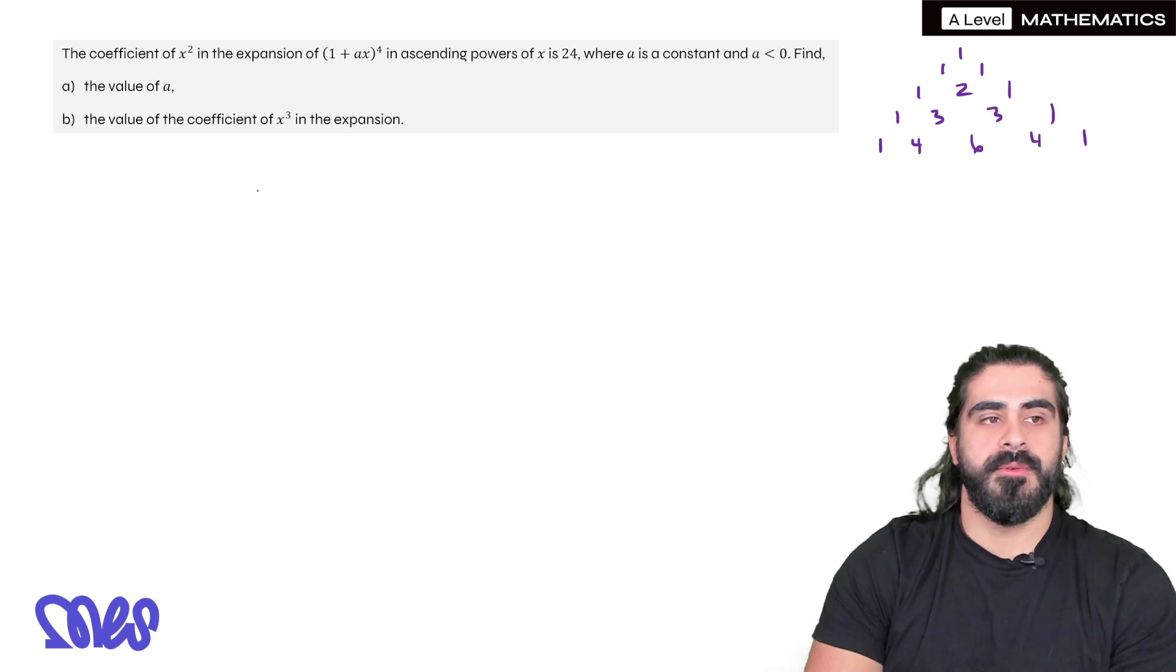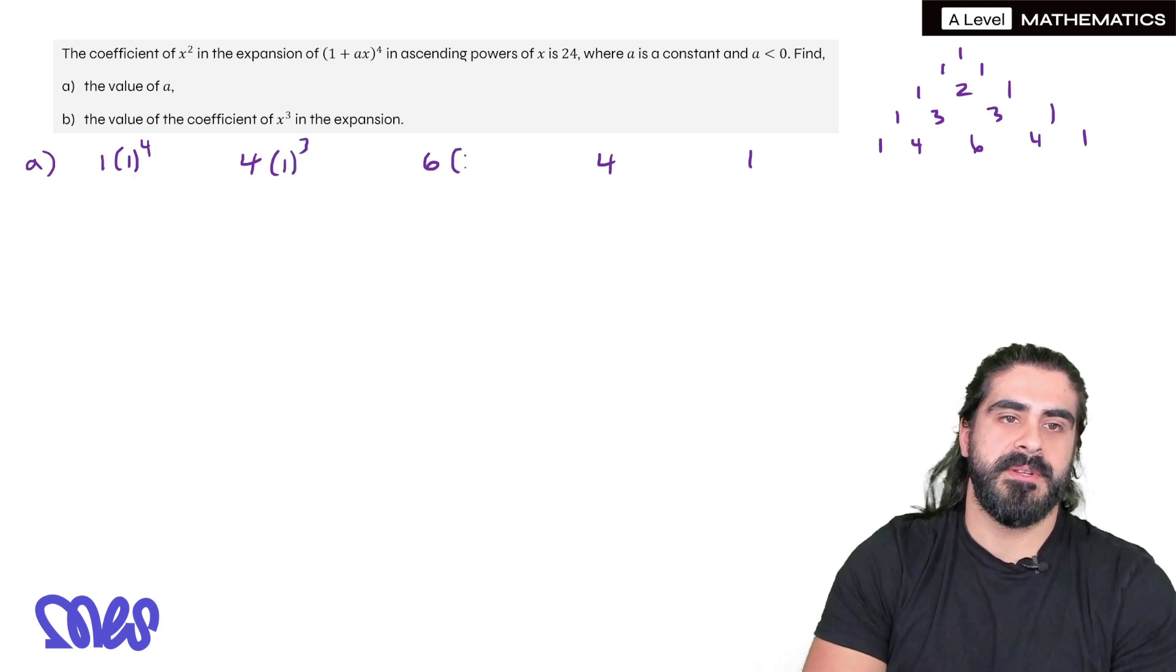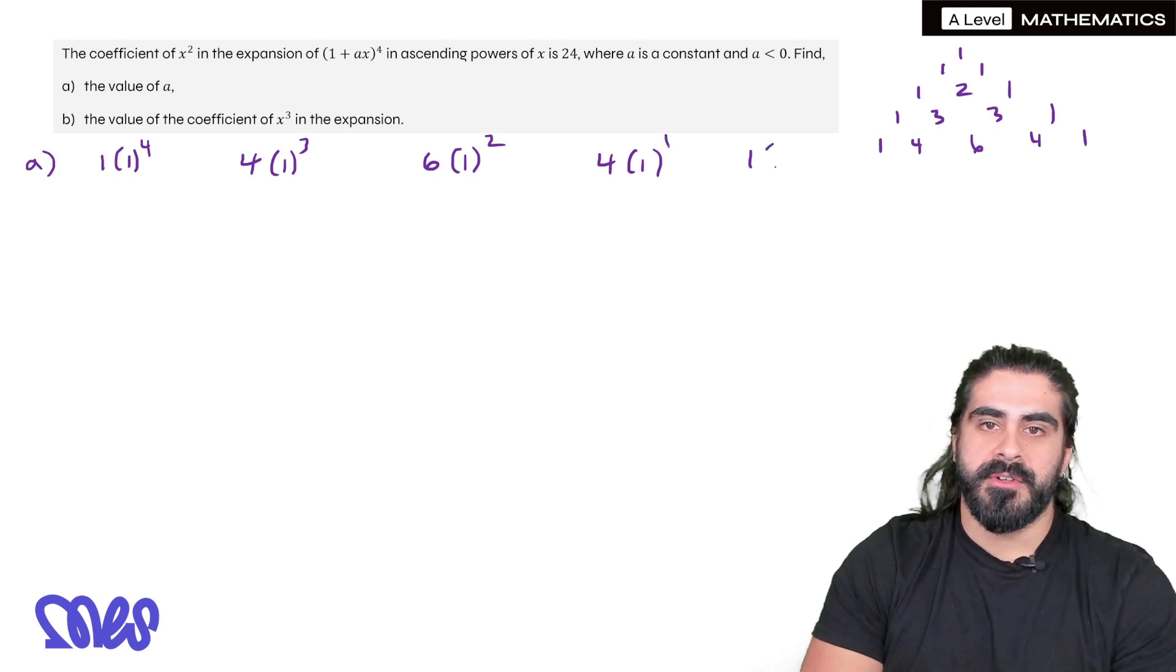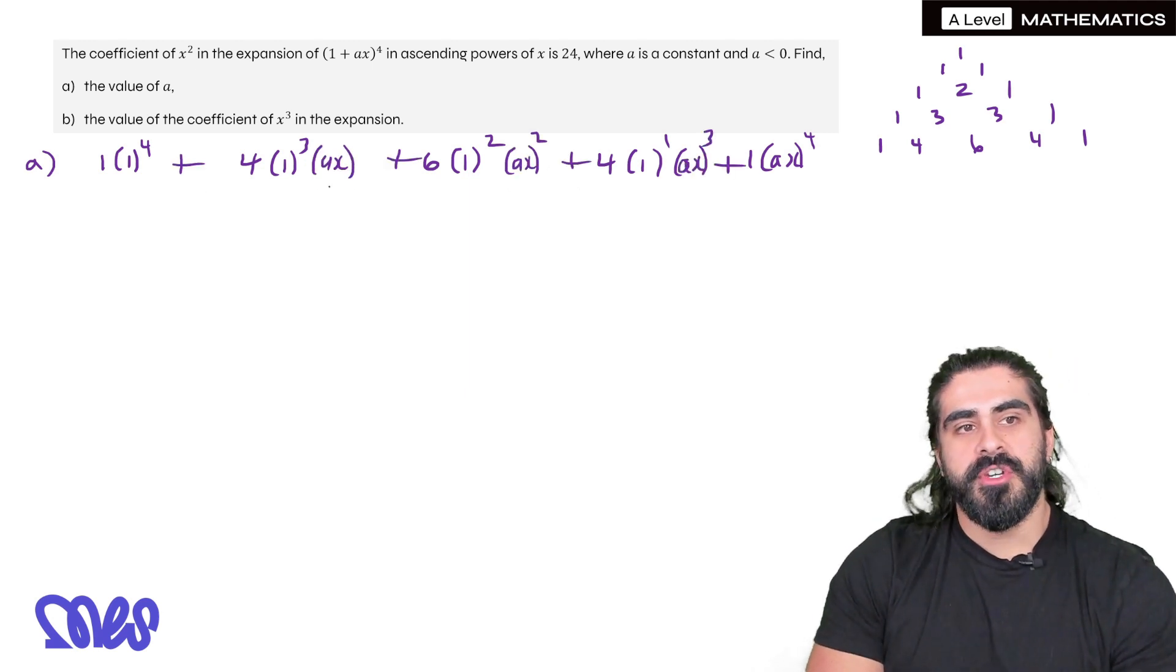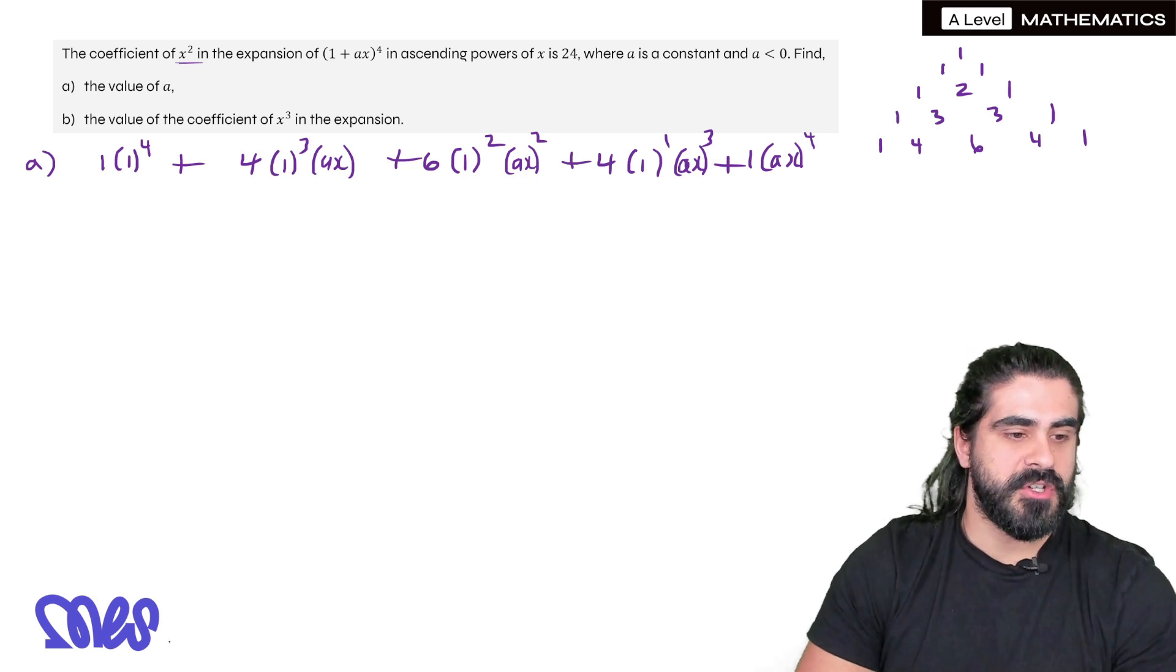So we have 1, 4, 6, 4, 1. So we have 1⁴, then it's going to go down in power. Now I'm being very explicit with this but if you don't want to write the powers of 1 you don't have to. And then none, then you're going to have (ax)⁴, (ax)³, add them all up. Now you can simplify or you can be tactical and say look I'm only interested in the coefficient of x². So if you were to look at the coefficient of x², this really is the only one I need to simplify.